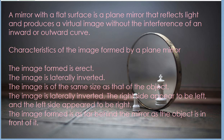The image is of the same size as that of the object — you will not appear taller than yourself in the mirror. The image is laterally inverted: the right side appears to be the left and the left side appears to be the right. The image formed is as far behind the mirror as the object is in front of it — whatever your distance is from the mirror, your image will have the same distance from the mirror.